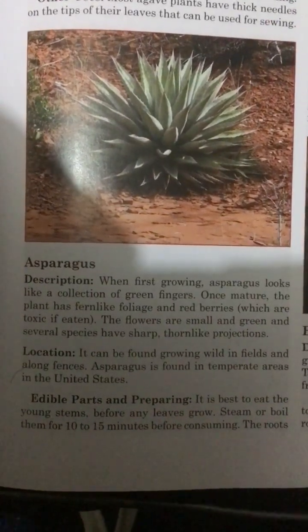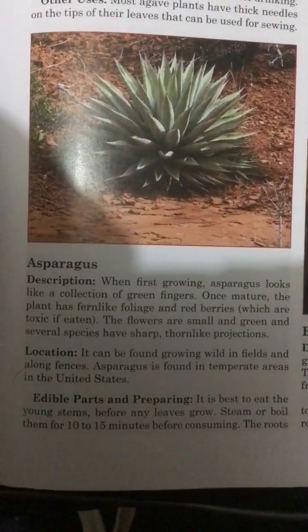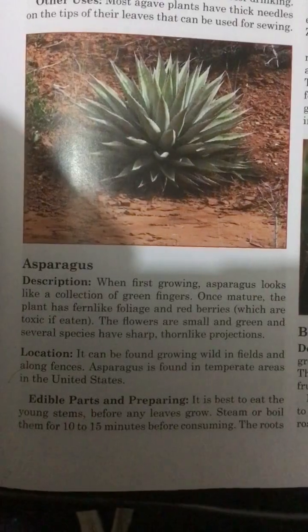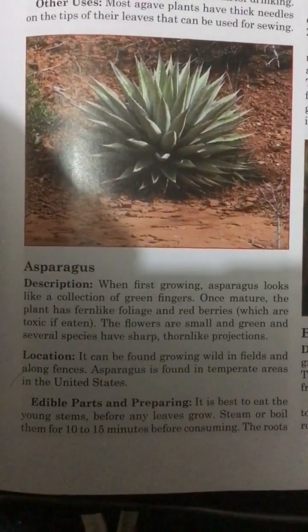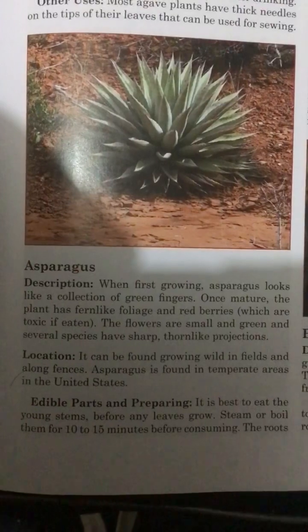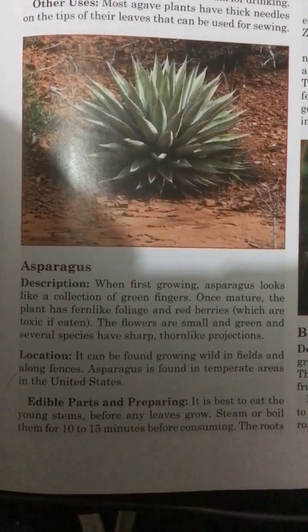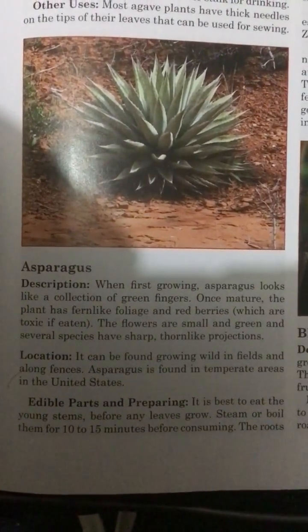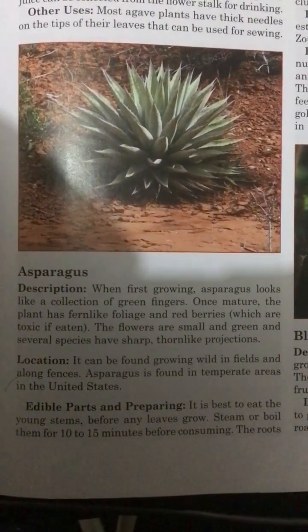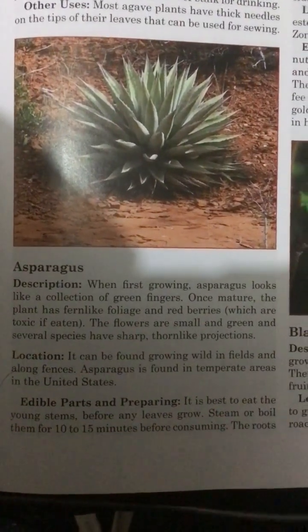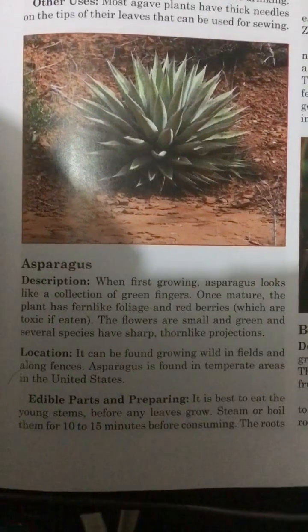Location: It can be found growing wild in fields and along fences. Asparagus is found in temperate areas in the United States.